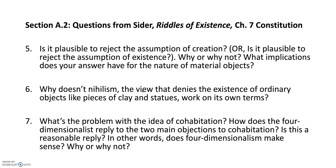Let's move on to section 2. These are three questions from chapter 7, Constitution, by Sider, also in Riddles of Existence. Question 5: Is it plausible to reject the assumption of creation? Why or why not? What implications does your answer have for the nature of material objects? Or you could answer the question with reference to the assumption of existence — one or the other. Those are two assumptions made in the antinomy. Is it plausible to reject one of them? Why or why not? And what implications does your answer have for the nature of material objects?